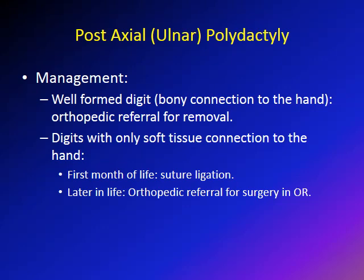For the treatment of post-axial or ulnar polydactyly: if the digit is well-formed with a bony connection to the hand, orthopedic referral for removal is needed — though these cases are rare. The vast majority have only soft tissue connection to the hand. If seen immediately after birth or in the first month of life, it can be treated easily with suture ligation. Later in life it may need to be done surgically.